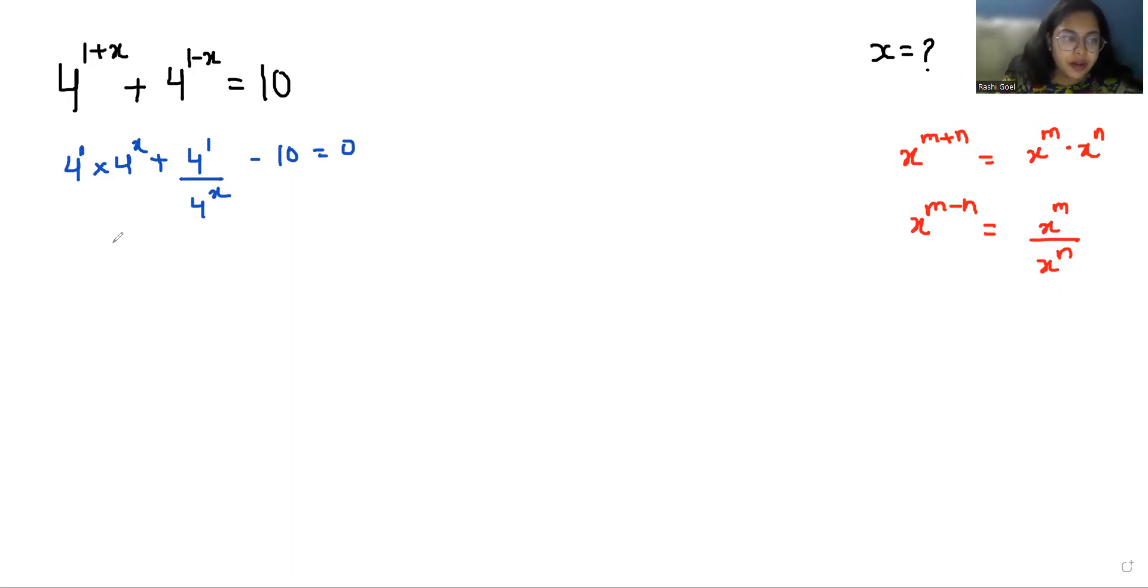Now 4^1 times 4^x plus 4^1 divided by 4^x minus 10 equals 0. So I'm going to take a substitution. Let 4^x equals a.